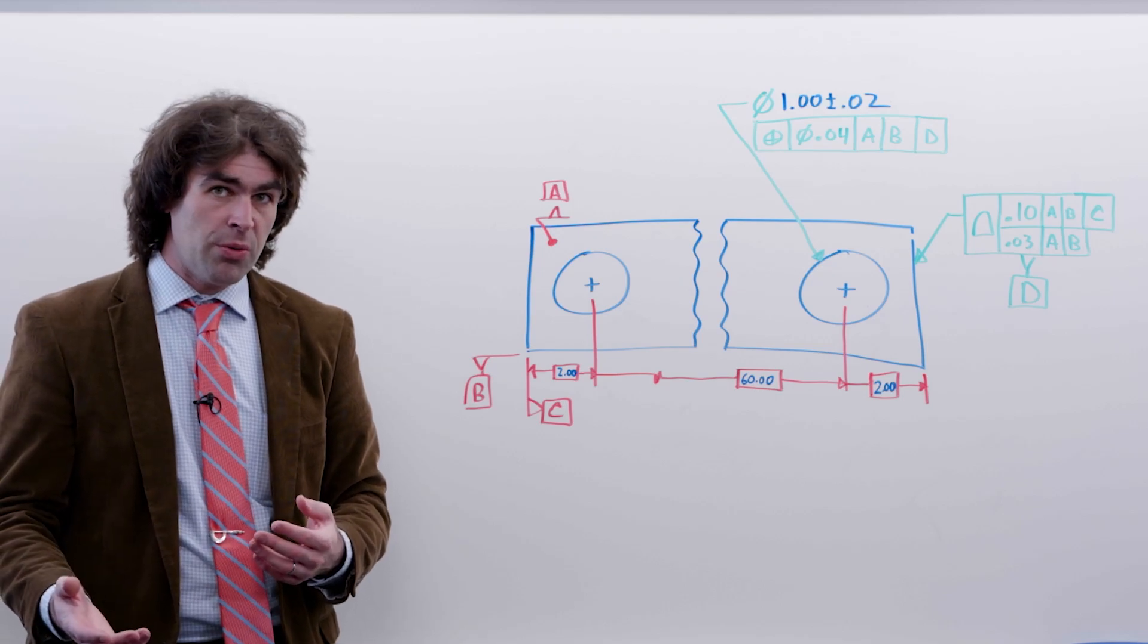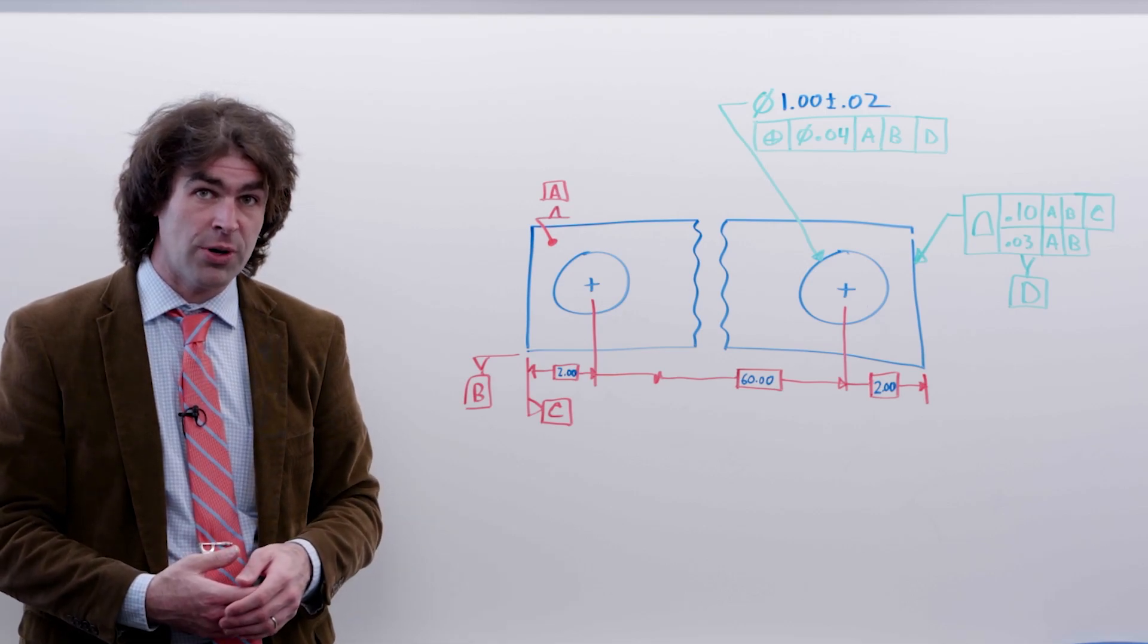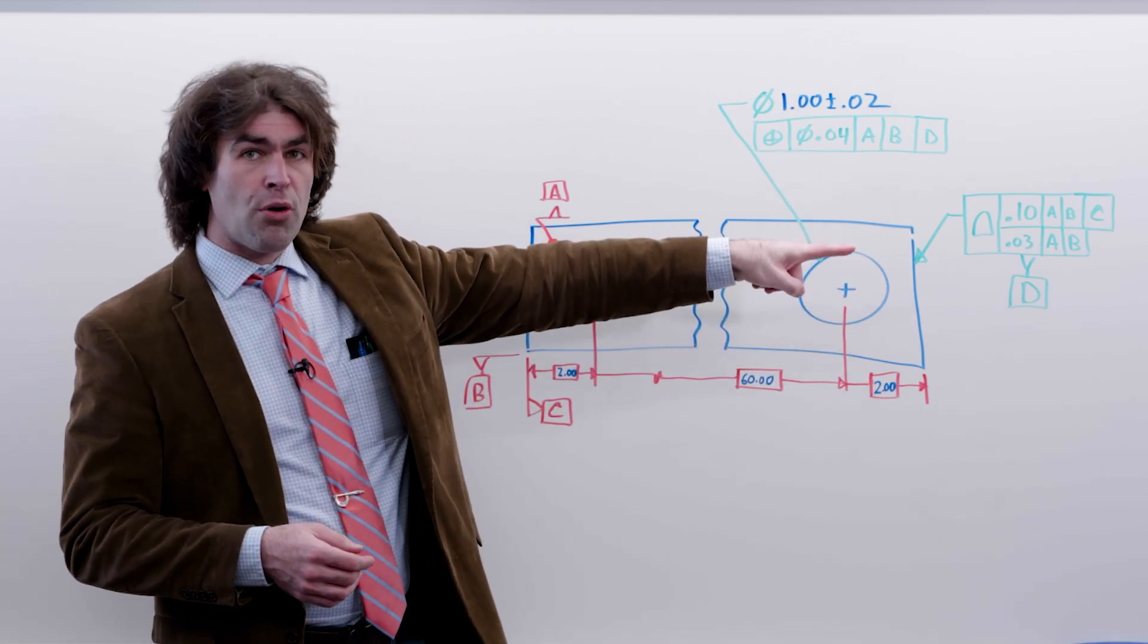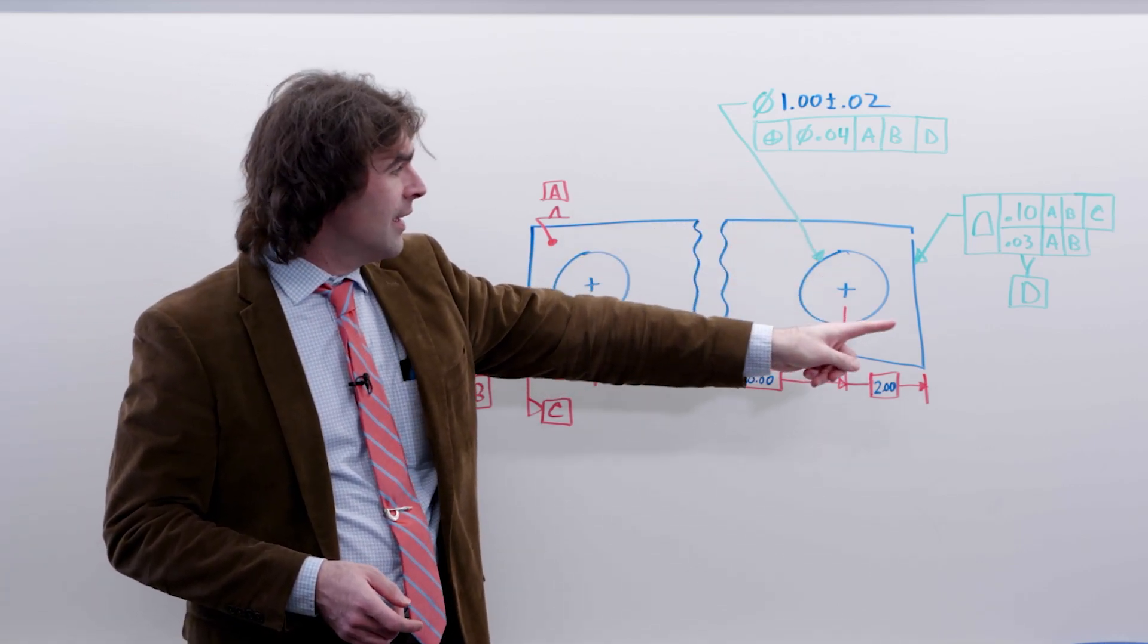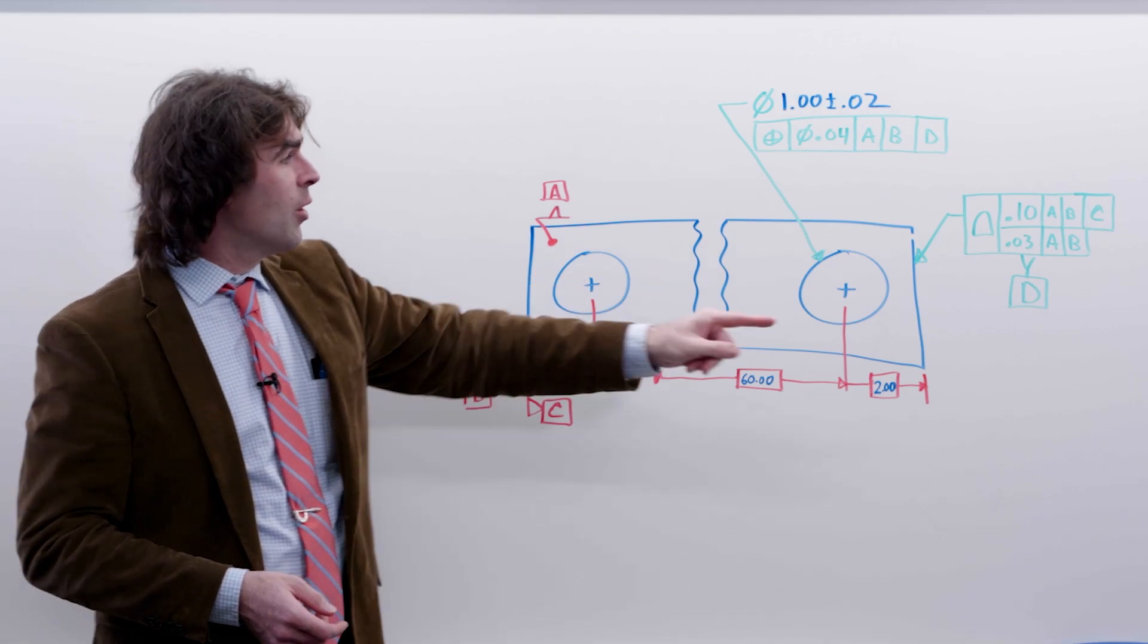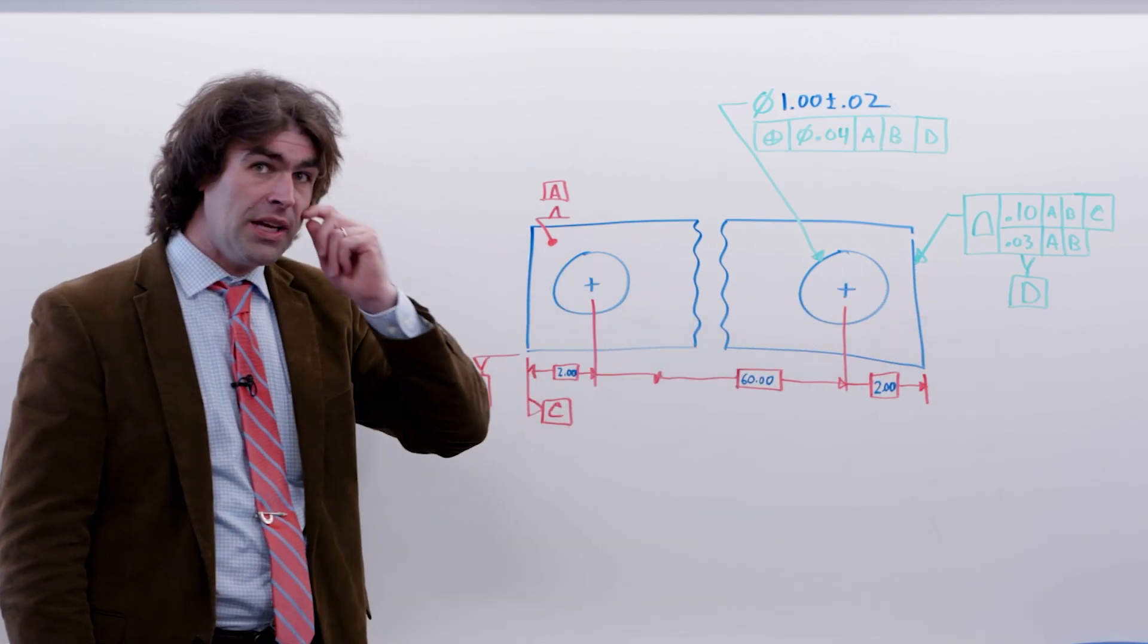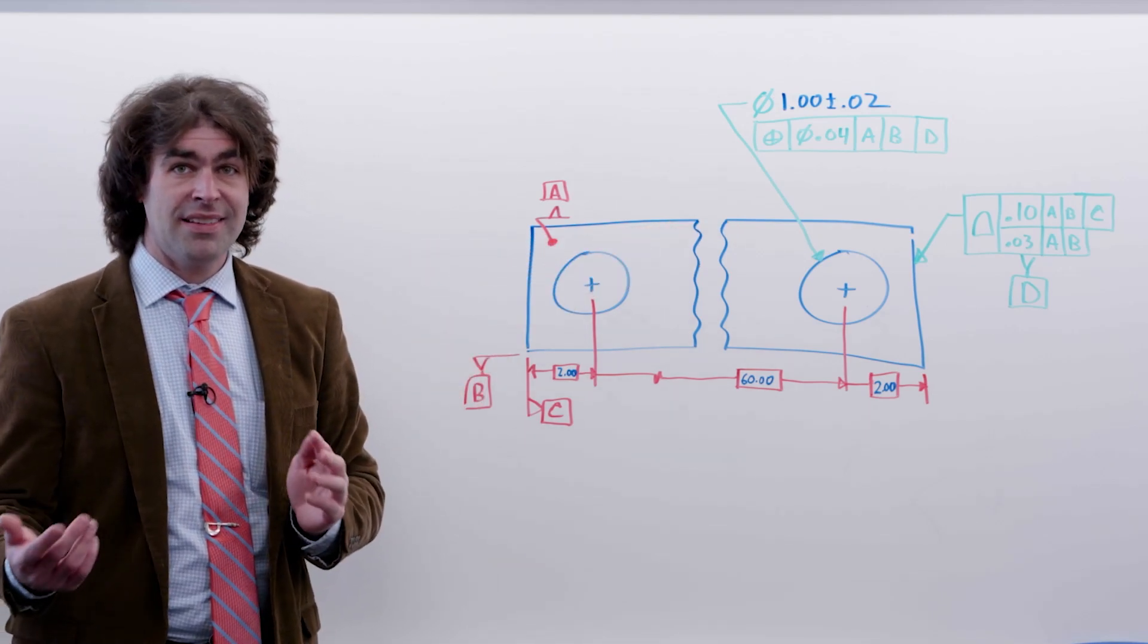And it also doesn't meet our functional requirements, or it might meet the requirements, but it's overly restrictive. So what we're going to do, and what I've already done on the board, is specify this side with a profile of 100 thousandths to A, B, and C. So we're relating this back to the original datum reference frame. We're going to control it with orientation and form tolerance to A and B, so we're not actually measuring over here. And we're going to make that datum D.